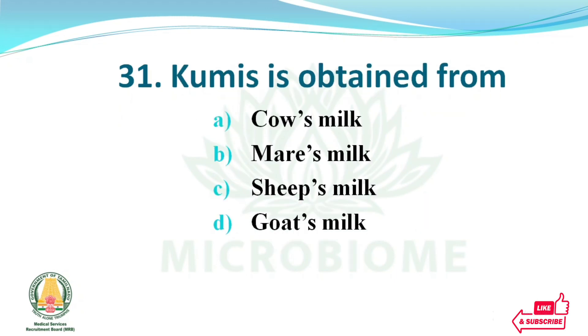Kumiss (QMIS) is obtained from — options: cow's milk, mare's milk, sheep's milk, goat's milk. The right answer: option B, mare's milk.